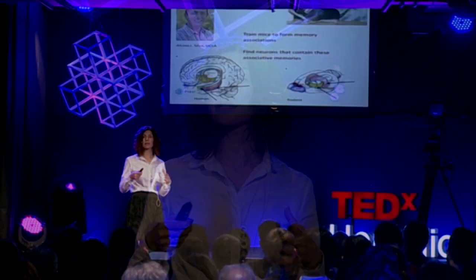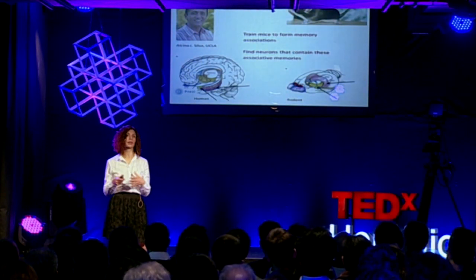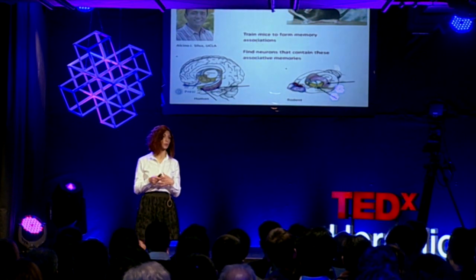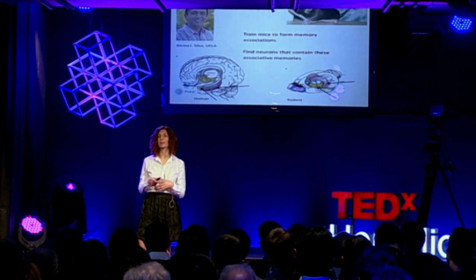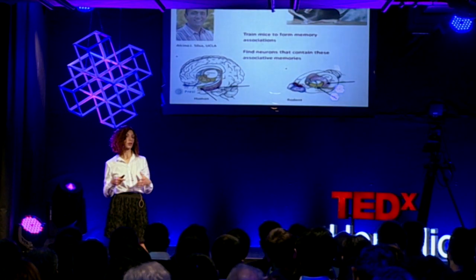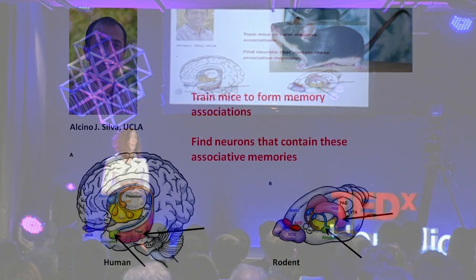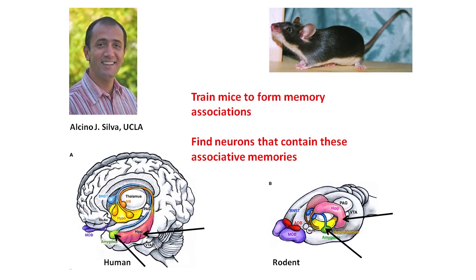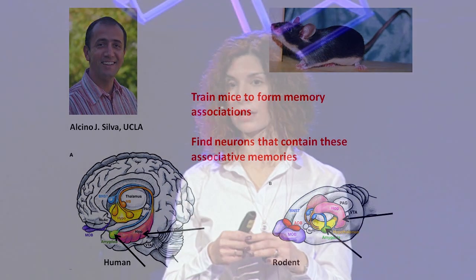So, where in this complicated universe do memory associations reside? Before I give you the answer to this question, I'd like to share with you a series of groundbreaking experiments that were recently done to help us understand this question. In the lab of my friend and collaborator Alcino Silva, mice are routinely used to study the formation of associative memories. These scientists also try to find out which are the particular cells that contain such memories.